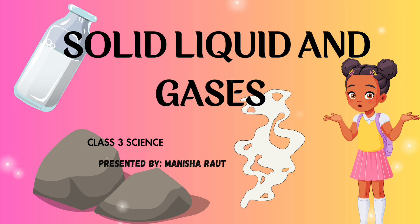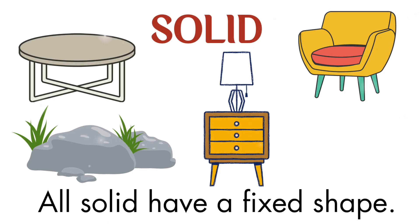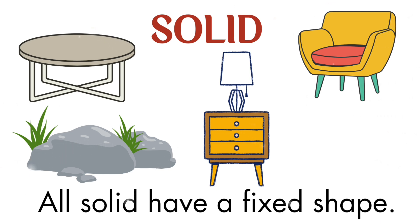Solid. All solids have a fixed shape. They do not change their shape when you press them or move them from one place to another. Like a table, chair, or stone — these are all things that are solid. Solids do not change their shape.